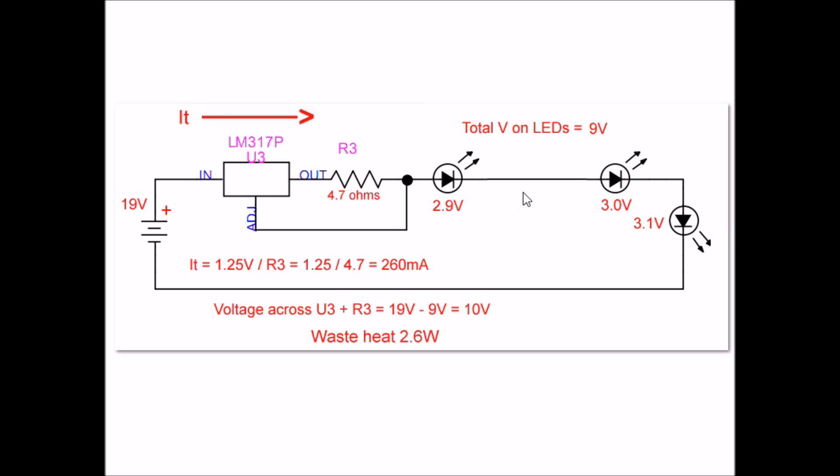What happened to the voltage from that LED? If we subtract 9 volts from 19 volts, you will find out that the drop across U3 and R3 is 10 volts. 10 volts times 260 milliamps is going to give me 2.6 watts.